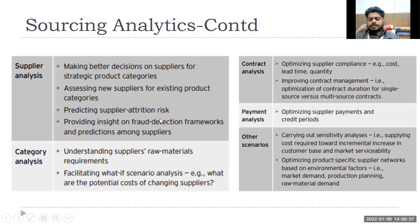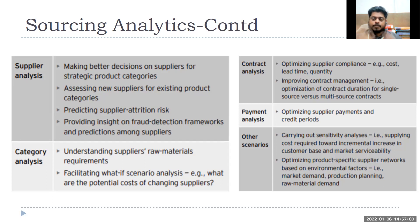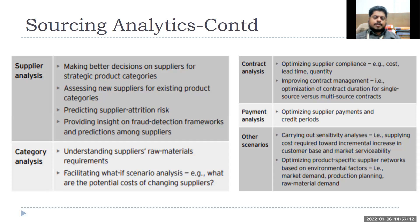Predicting supplier attrition risk is important. For a big company like GE Healthcare or ITC, there might be 500 to 1,000 or more suppliers. Similar to employee attrition analysis, here we look at supplier attrition — which supplier is prone to leave. Then you should have a backup or at least discuss with them to understand why they are leaving.